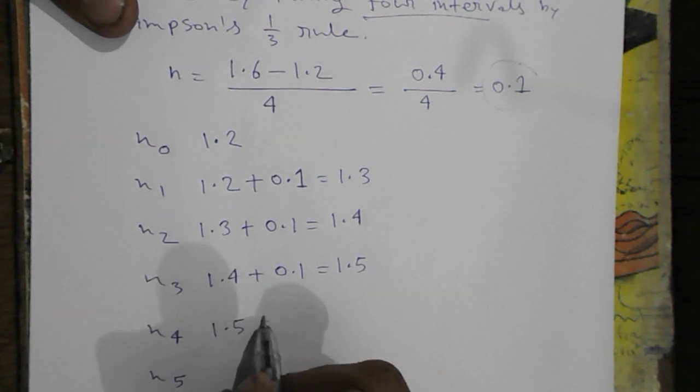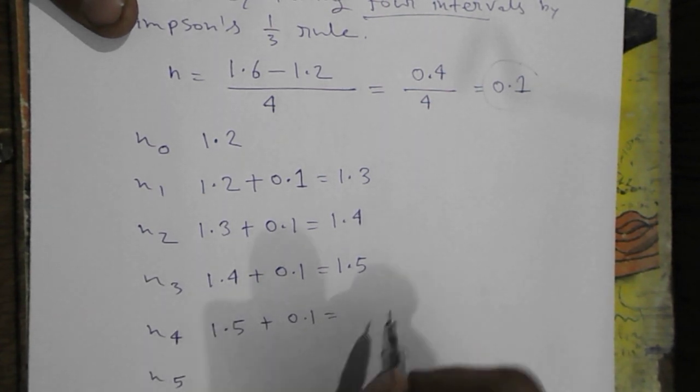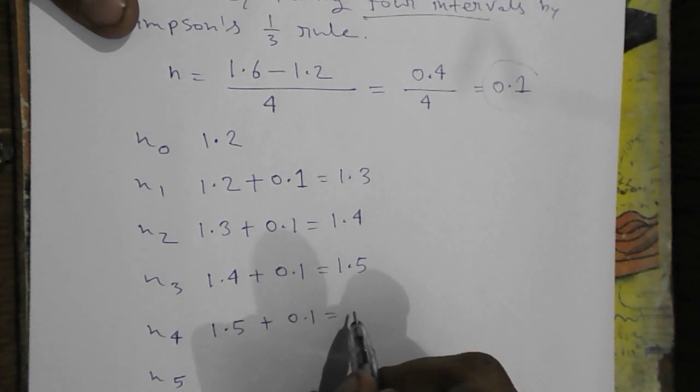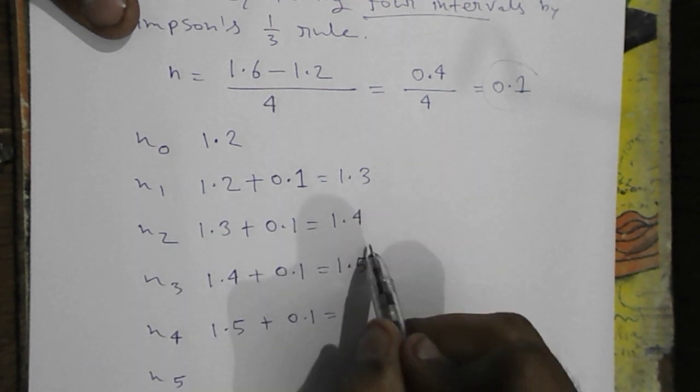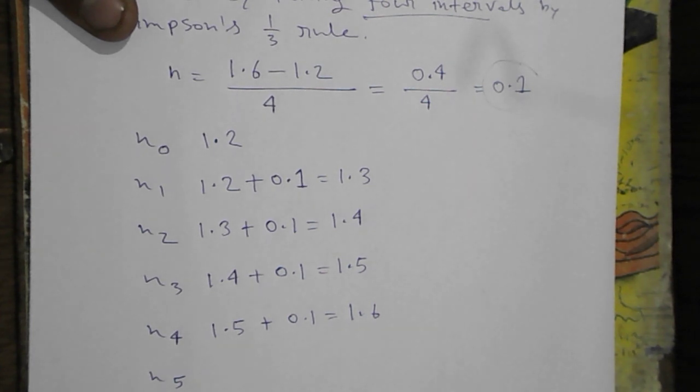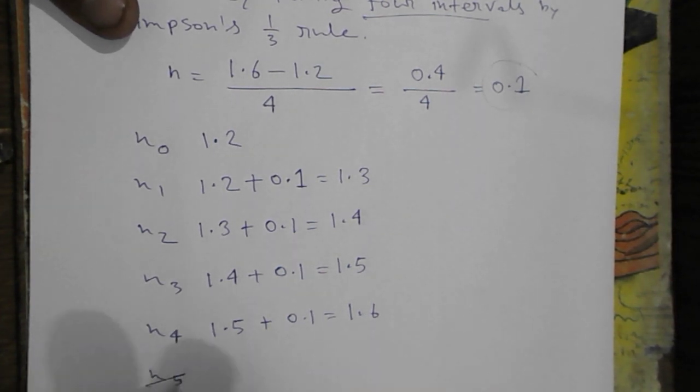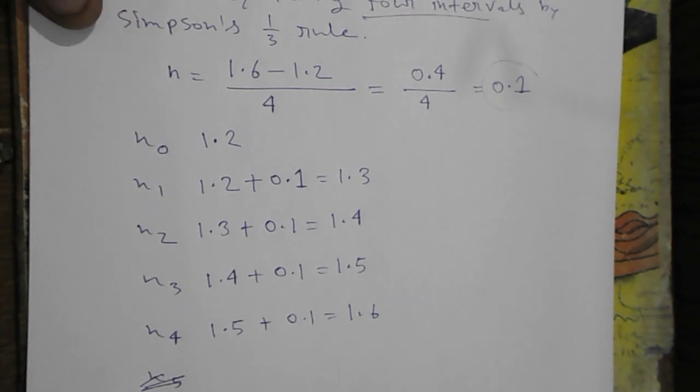With 1.5 we will again add 0.1 that is 1.6. So we have reached. We don't need x5.